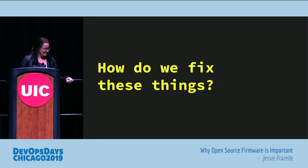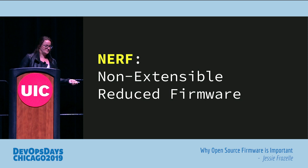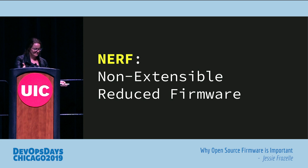So how do we fix these things? With open source firmware — that's the point of this talk. When the open source firmware movement started, it was first called NERF: Non-Extensible Reduced Firmware. They got rid of the name but it's still doing everything that entails. They're trying to make firmware less capable of doing harm and make its actions more visible.